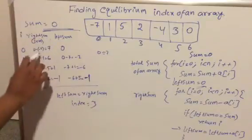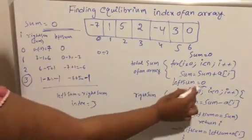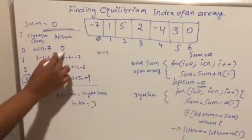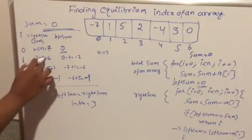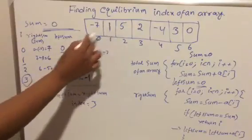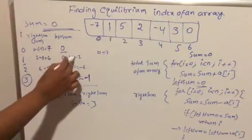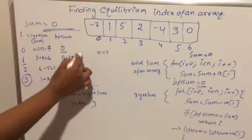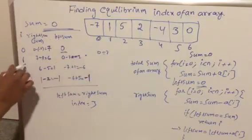Initially, i is zero, the right sum starts as the total, and the left sum is initialized to zero. At index zero the element is minus seven, so right sum becomes seven after subtracting. At index one, seven minus one equals six, and the left sum remains zero.